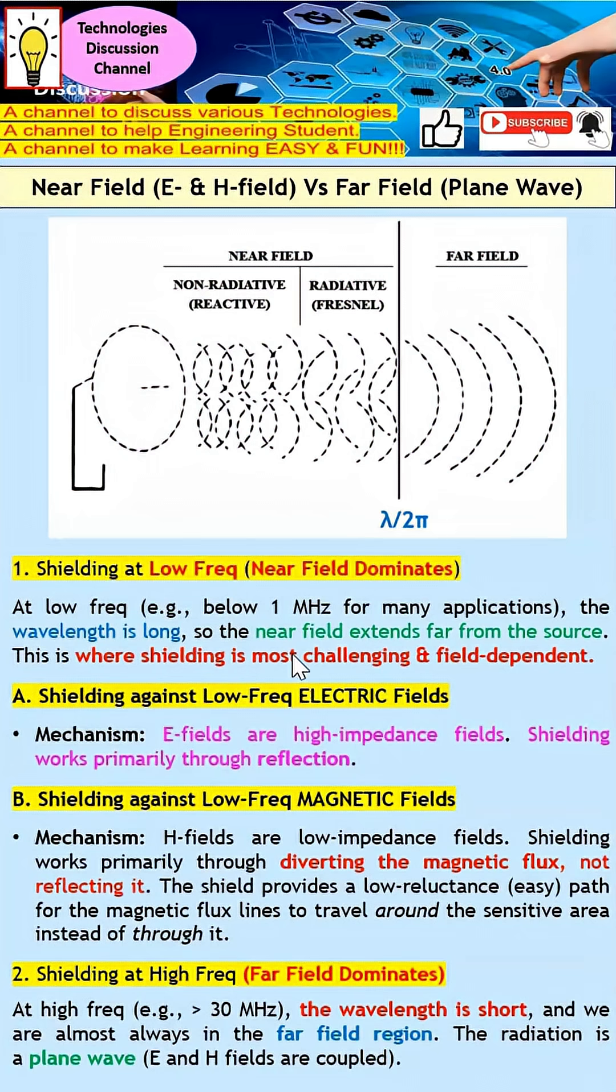Let's quickly discuss how to shield against low frequency electric fields. E fields have high impedance, and because of impedance mismatch, most of the shielding works through reflection. So you don't have major issues when shielding against low frequency electric fields.